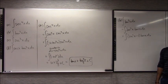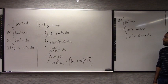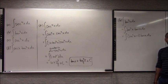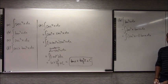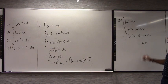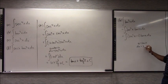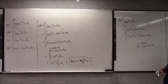U equals secant x. If u equals secant, du would be secant x tangent x. You can get a secant from these elements. The integral of a sum is the sum of the integrals — that's a rule — so you just focus on this and that separately.